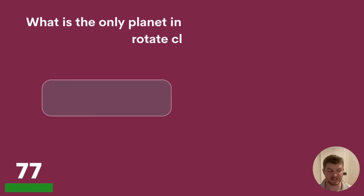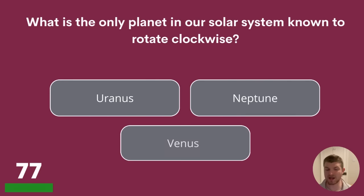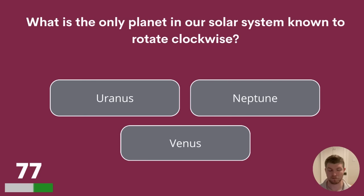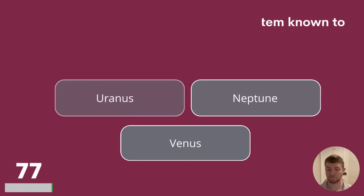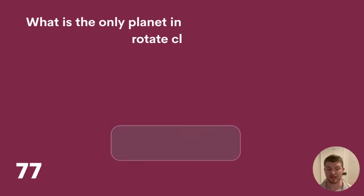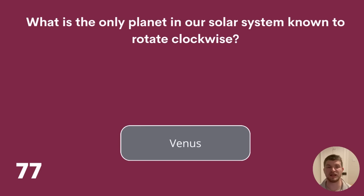Question 77. What is the only planet in our solar system known to rotate clockwise? Uranus, Neptune, or Venus? The answer is Venus.